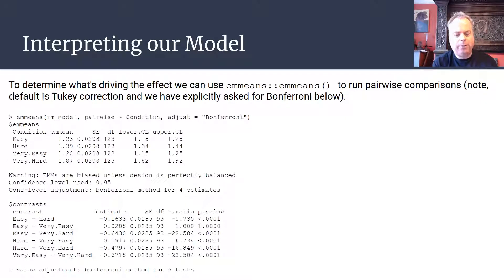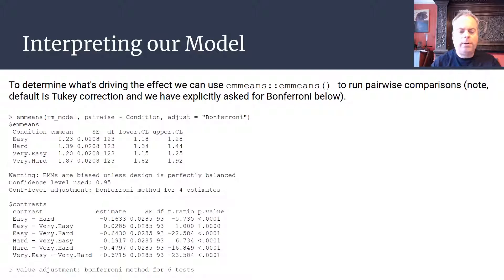This is a nice example of how building a visualization first gives you an inkling of what you're likely to find when you build the ANOVA and run pairwise comparisons. That covers how to run a repeated measures ANOVA in R for a design where the same participants take part in all experimental conditions. Remember: when using aov4, you need to capture the repeated measures design by making the condition explicit in the random effects structure; otherwise it's the same as the one-way ANOVA for between-participants designs.